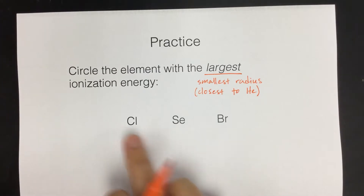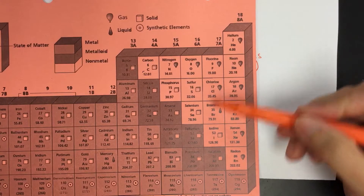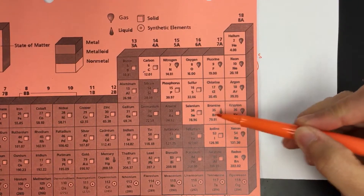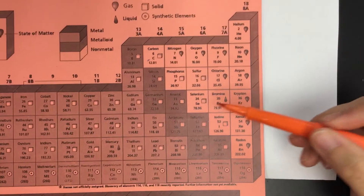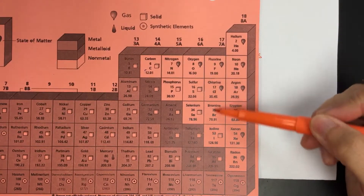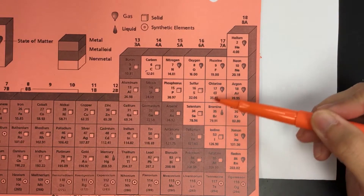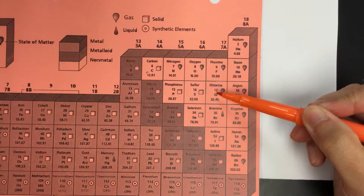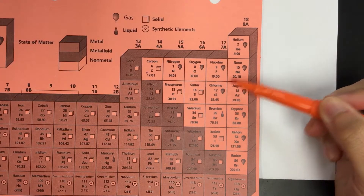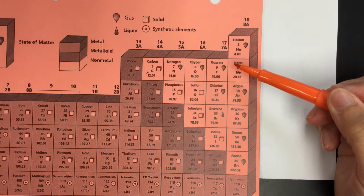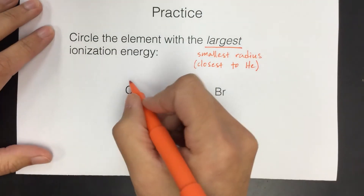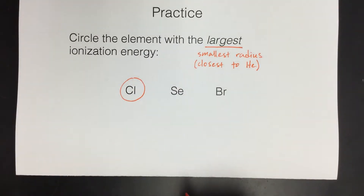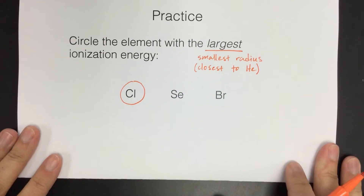We compare chlorine, selenium, and bromine on the periodic table. We want the largest ionization energy, which really just means the smallest atom. Small atoms are near helium, and of those three, chlorine is the one closest to helium. So chlorine is the smallest, and therefore it's going to have the largest ionization energy because it will be hardest to remove its electron.